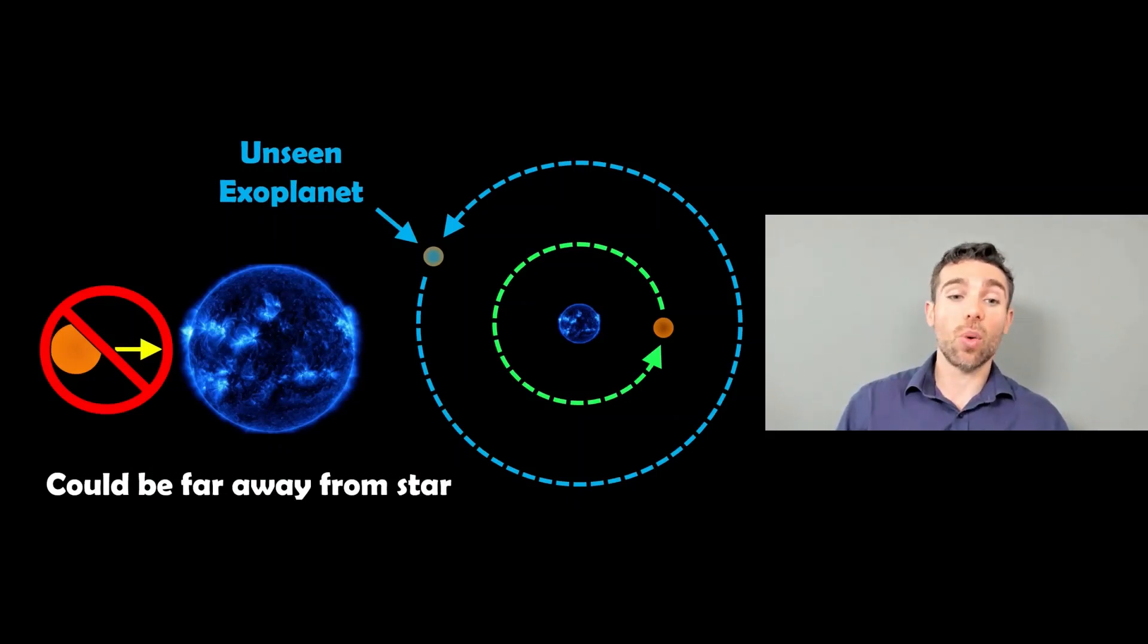That could be for a few reasons. One could be that it's a long way from the star, and if it's a long way from the star, it's going to have quite a long orbital period. If it's on the order of years or months, it's going to have a long time period before you have a transit, so we just haven't detected one yet.